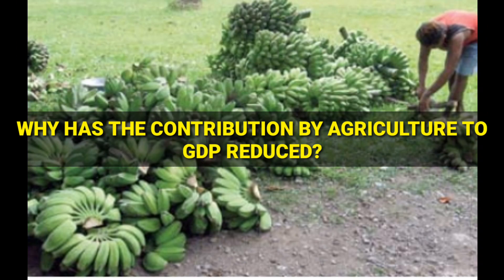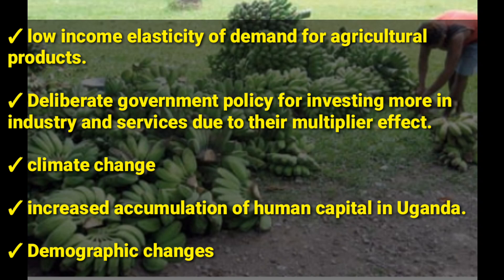Why has the contribution by agriculture to GDP reduced even when the sector employs most Ugandans? The first reason is low income elasticity of demand for agricultural products, especially foodstuffs. Even when you increase the supply of agricultural products, the demand will not increase — most of the time they have fixed demand.